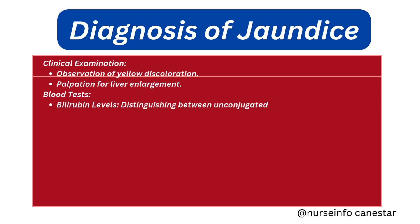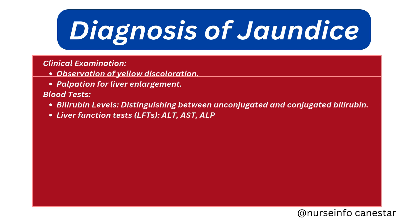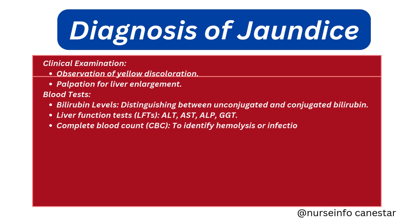Blood tests include bilirubin levels to distinguish between unconjugated and conjugated bilirubin, liver function tests where elevated levels of ALT, AST, ALP, or GGT can pinpoint liver dysfunction, and a complete blood count to detect anemia or infection.